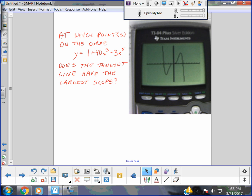All right, so at which points on the curve y equals 1 plus 40x cubed minus 3x to the 5th does the tangent line have the largest slope?